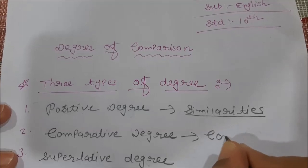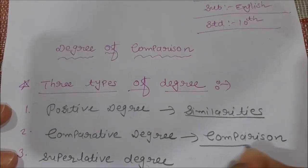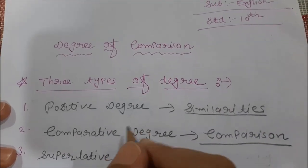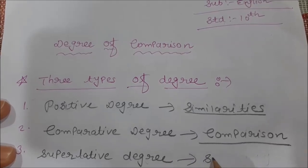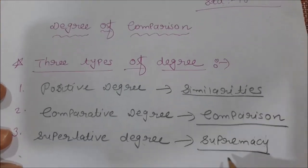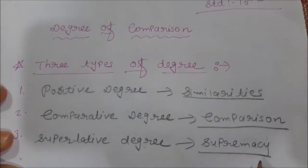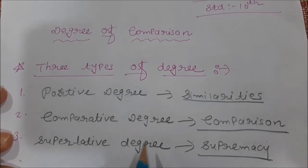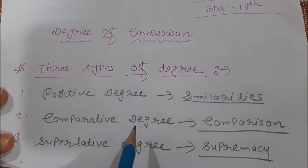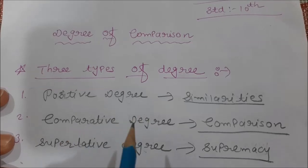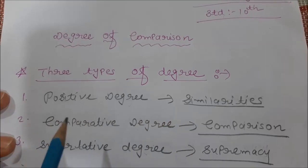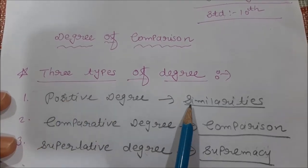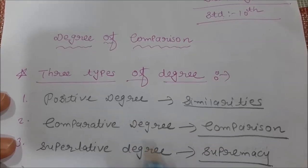Comparative degree is useful to show comparison between two things or two people. Superlative degree is useful to show supremacy — meaning something is only one and superior. I want students to have a clear idea of which rule belongs to which grammar topic, so you can speak fluently without making mistakes. Positive degree shows similarities, comparative shows comparison, superlative shows supremacy.